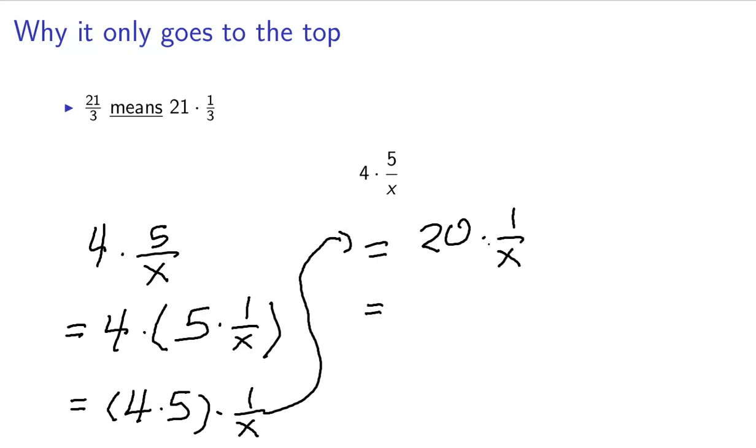And remember that this just means 20 divided by x. So this is the long way to do it, just to show you why it works the way it does. But this is why the constant only goes to the top, not the top and the bottom.